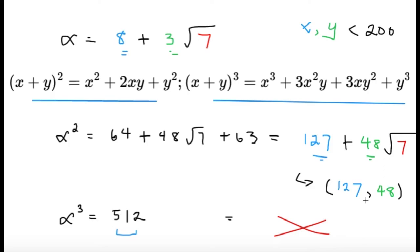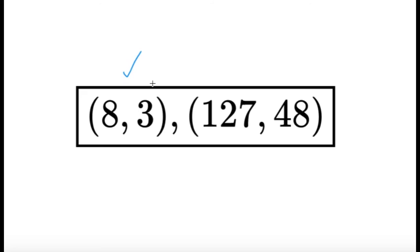So, to wrap up, we only have two solutions, 8 comma 3, which is our minimal solution. And then, we have another solution, which is generated, which is 127 comma 48. And these are our only two solutions.